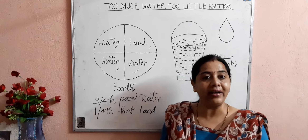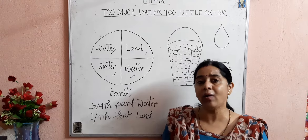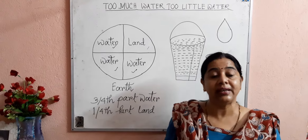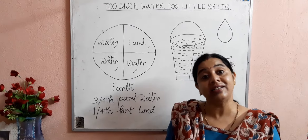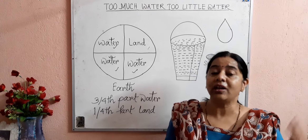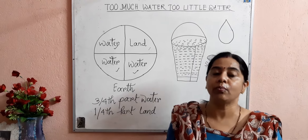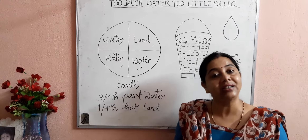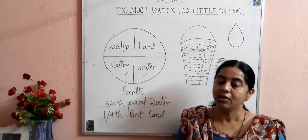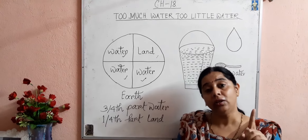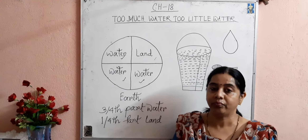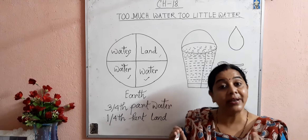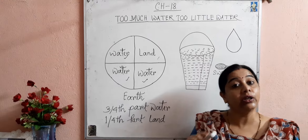In the water cycle — you have an idea about water cycle from lower classes — the sun's heat evaporates water from water bodies such as ponds, lakes, rivers, streams, oceans and seas, forming clouds in the sky. By the process of condensation and precipitation, this water comes back to the earth's surface as rain. But most of the water again goes back to the seas and oceans, leaving only a little amount of water on the earth's surface for the use of all living beings.